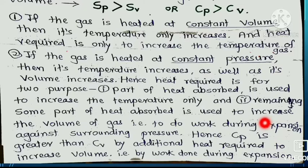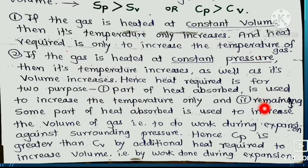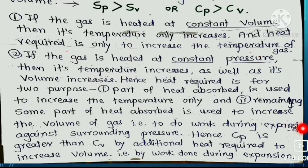When gas is heated at constant pressure, some energy is needed to expand the gas against the surrounding external pressure, and thus to increase the volume. Therefore, Cp is greater than Cv by the additional heat required to increase the volume. At constant pressure, more heat is needed: the heat to raise 1 degree centigrade temperature plus the heat needed for volume expansion.